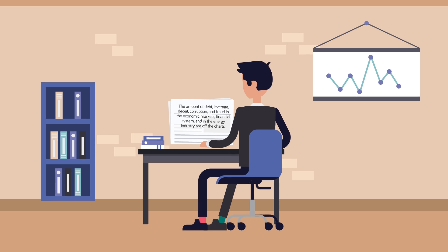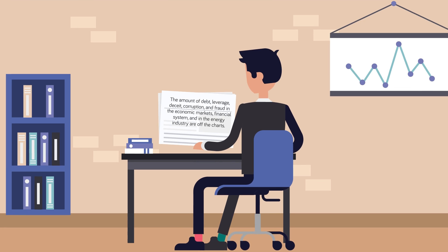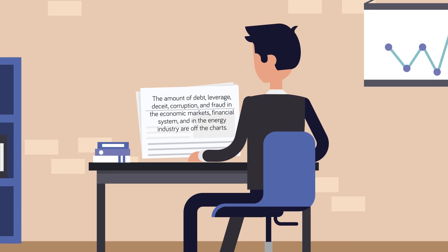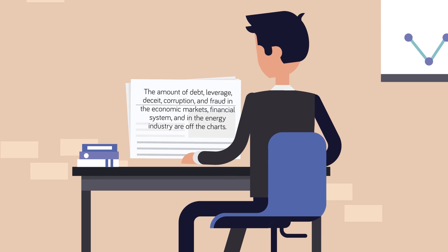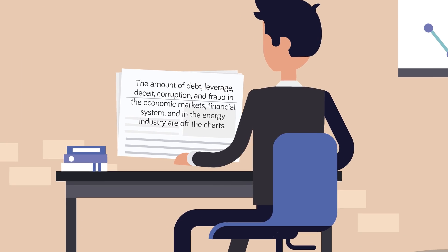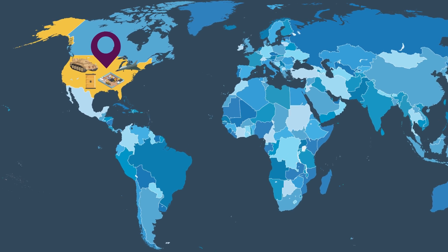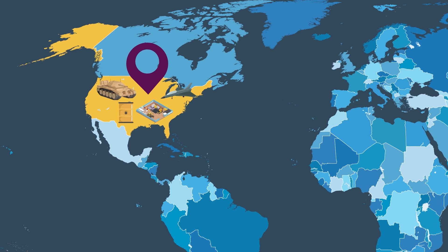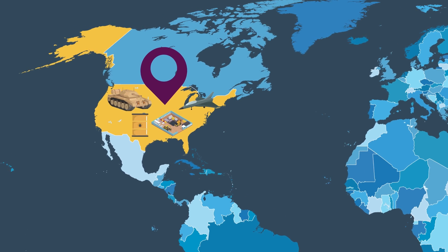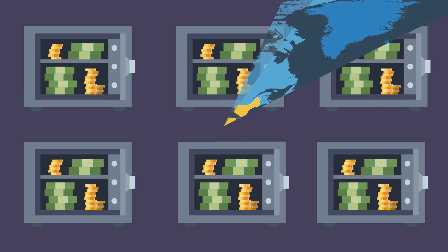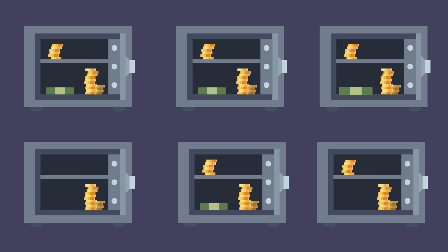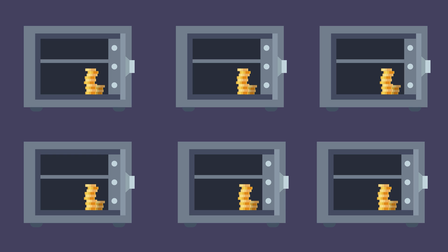There are many critics of this system, with one economist writing: "The amount of debt, leverage, deceit, corruption, and fraud in the economic markets, financial system, and in the energy industry are off the charts." Another bonus for the USA is that it can buy its oil with its own products, which might mean massive construction contracts, expensive military planes, or technologically advanced tanks. That said, Bloomberg is saying the dollar as reserve currency might be coming to an end, and the days of exorbitant privilege are fast running out.